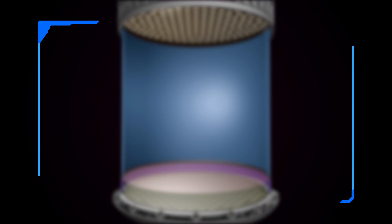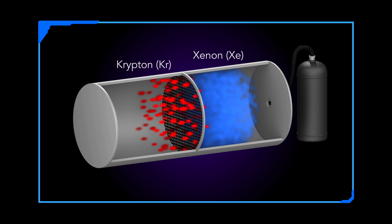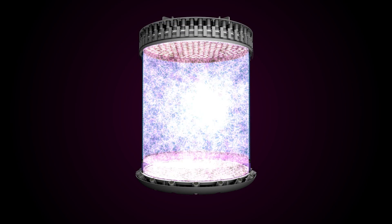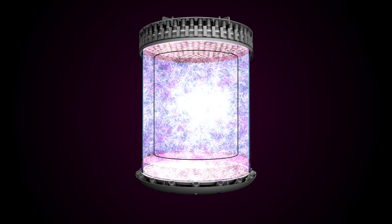First, the researchers will purify the xenon to an incredible degree to get rid of traces of radioactive krypton. The goal is less than one krypton atom per 100 trillion xenon atoms. Next, they'll use only the innermost 80% of the purified xenon in the tank to detect dark matter.